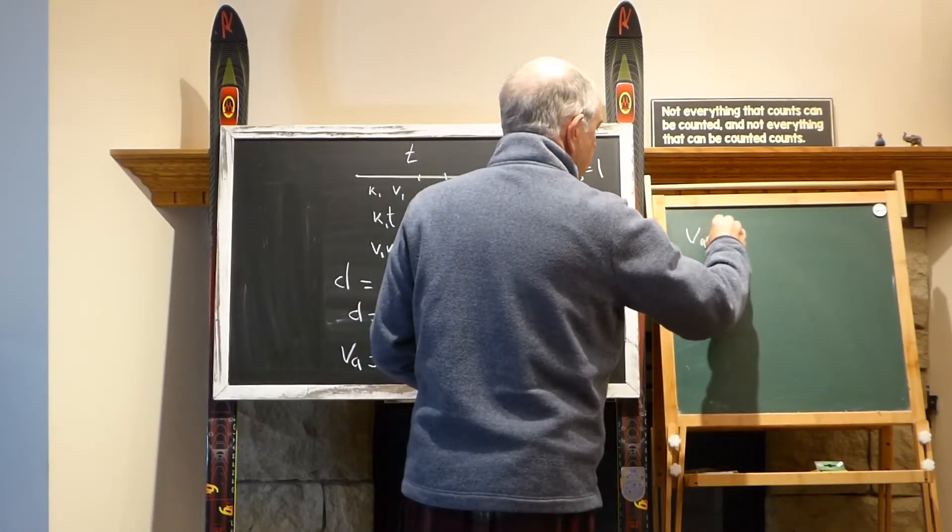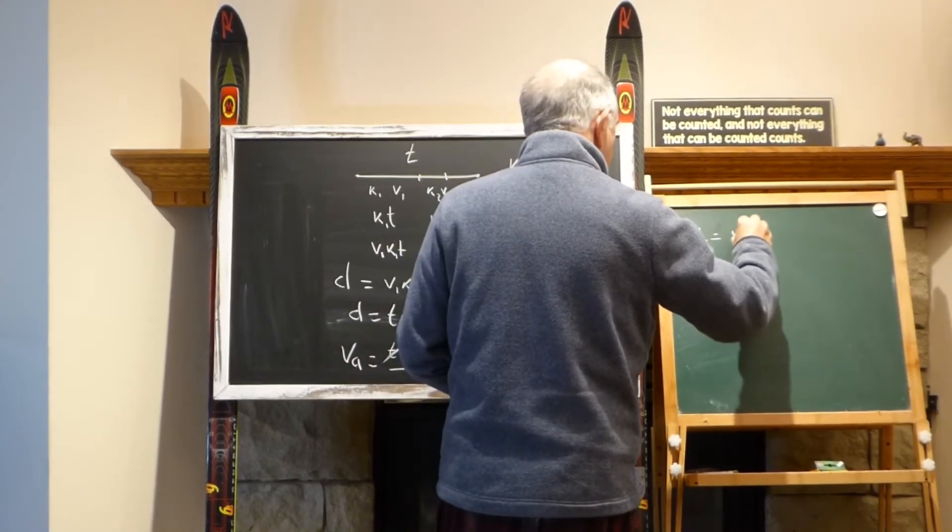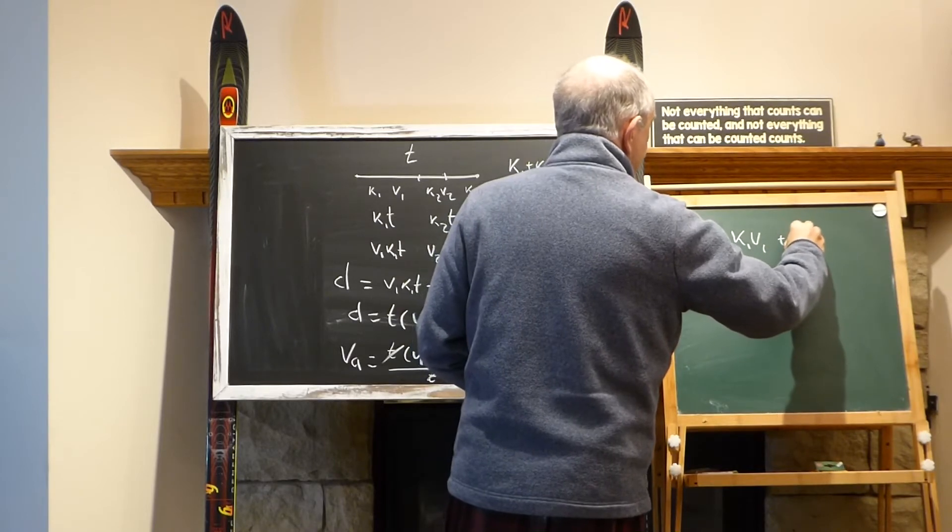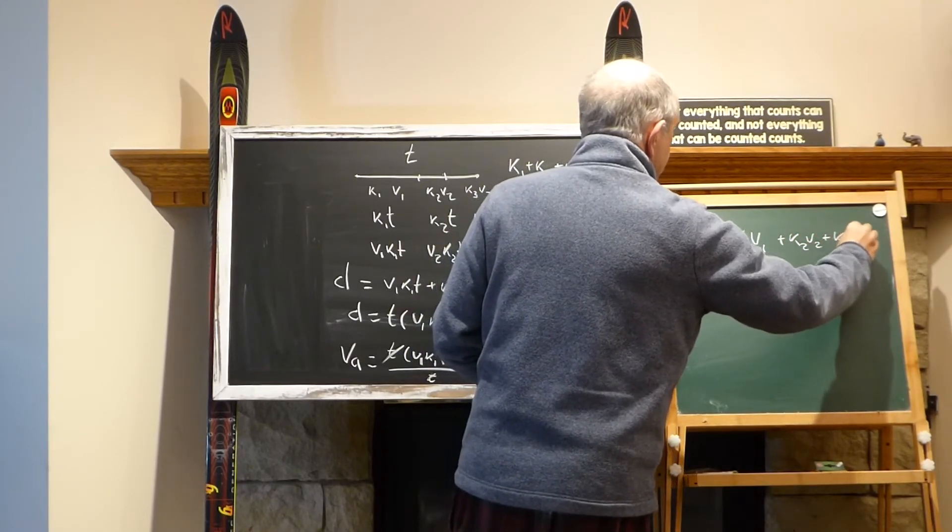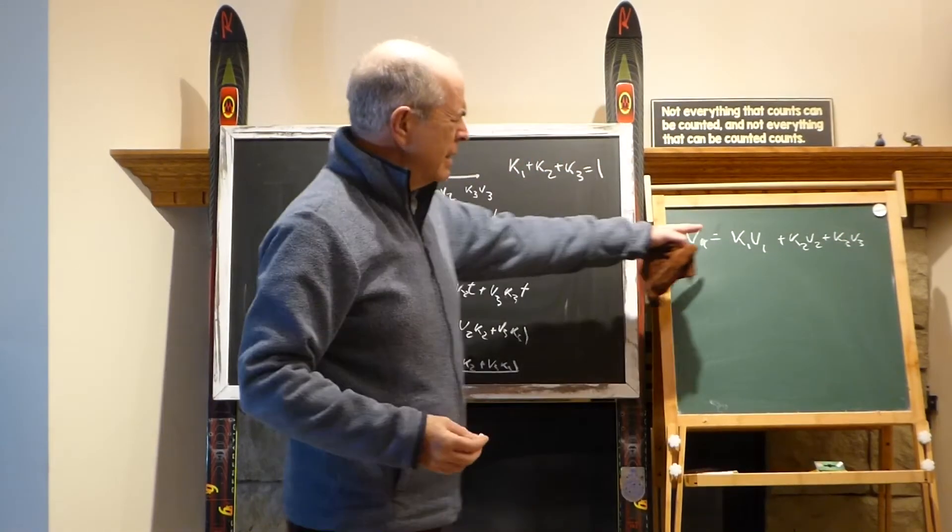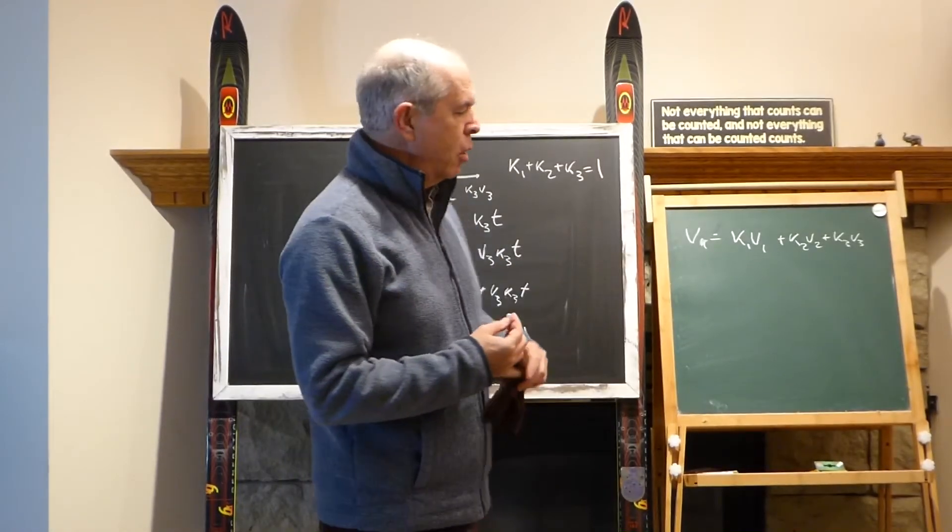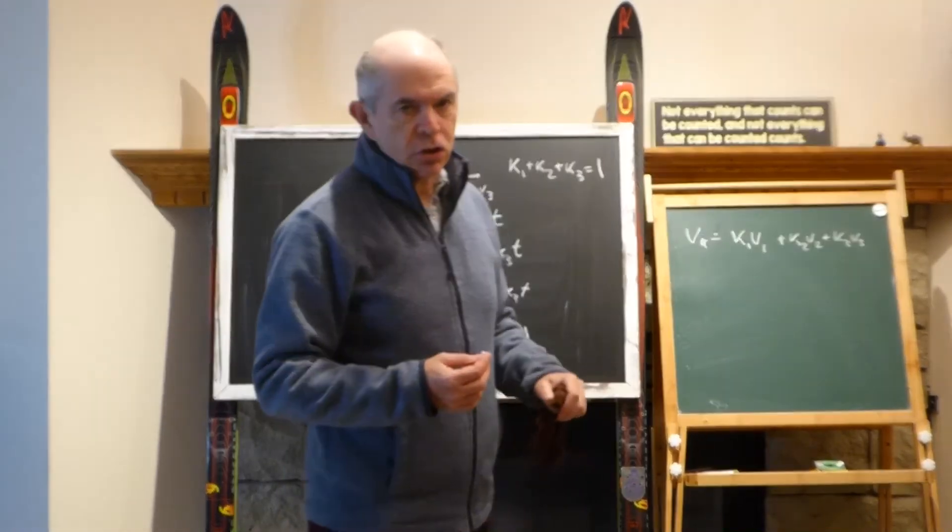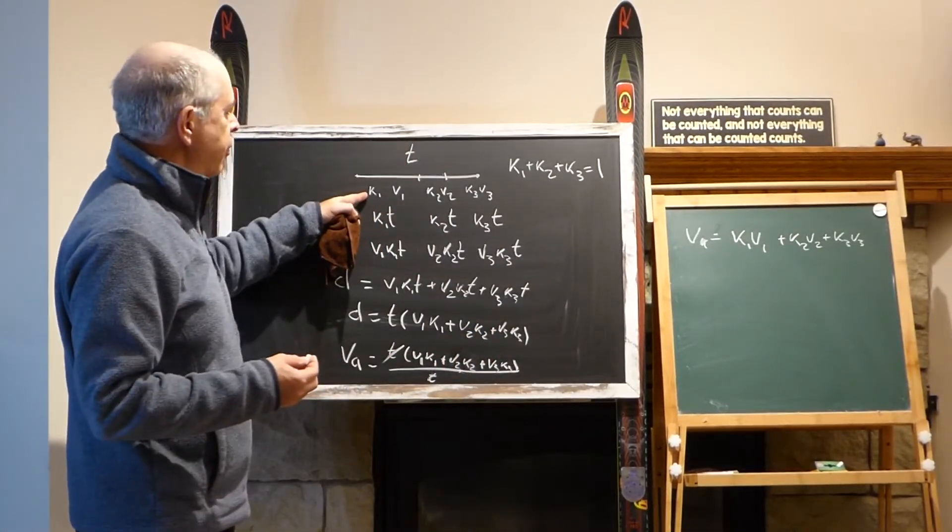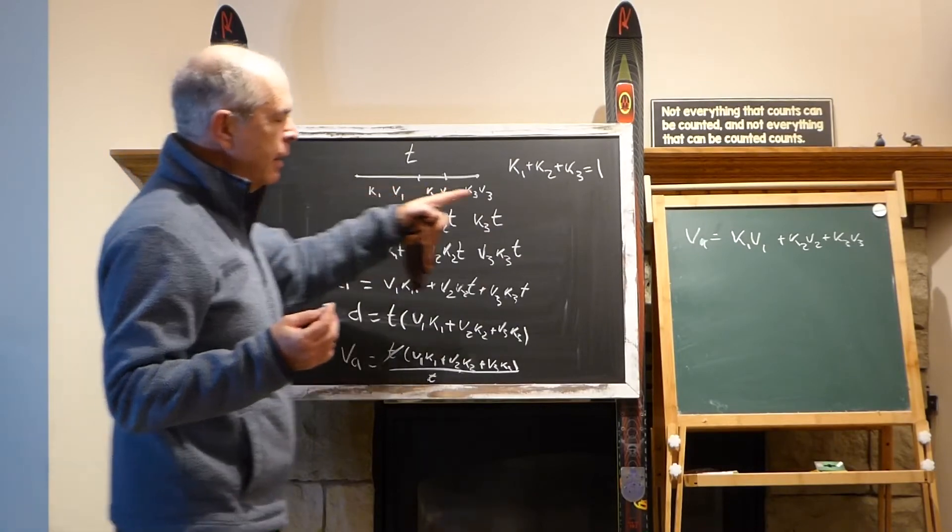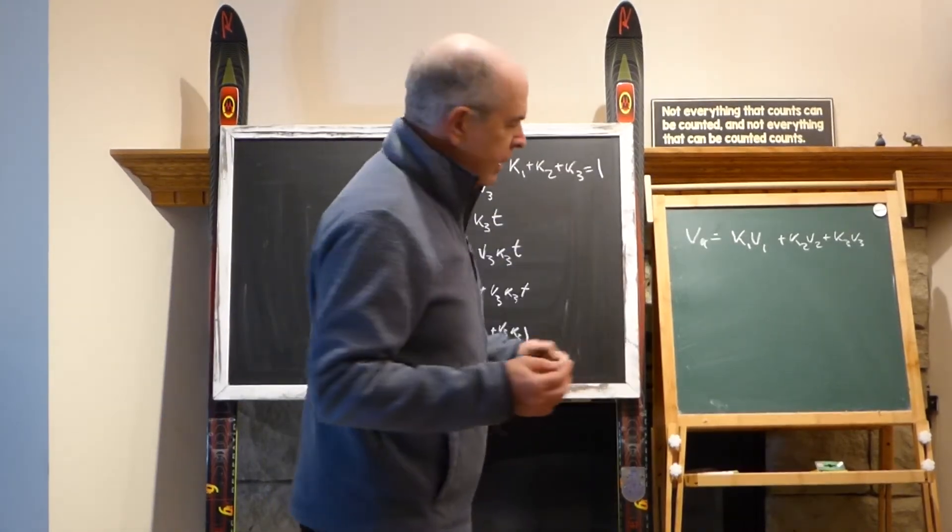v_average would be k1*v1 plus k2*v2 plus k3*v3. This k1 is some kind of a number, a proportion. This is called weighted average. Because we travel most of the time, in this case 90% with the first speed, this would be more important.